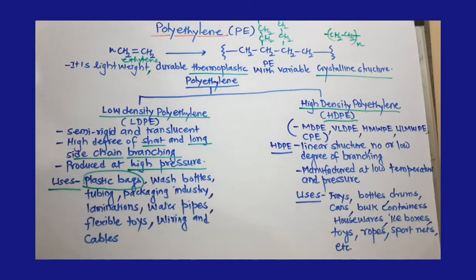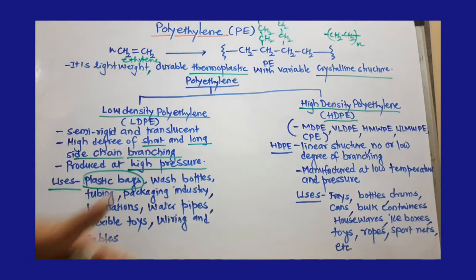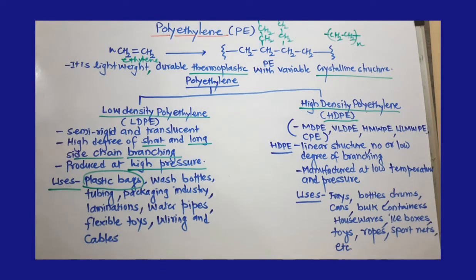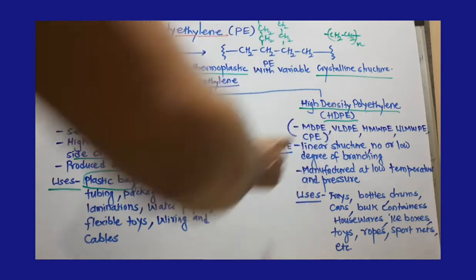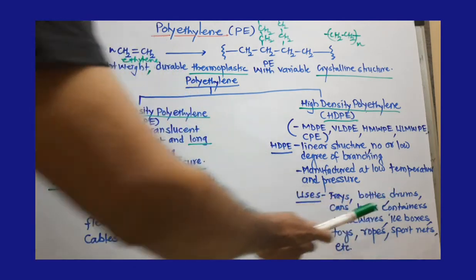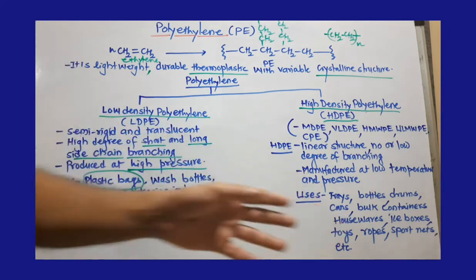LLDPE, linear low density polyethylene, is actually a mixture of monomers with different properties, which is why it is not included in the main classification. Moving to HDPE — high density polyethylene — it is actually linear, with no branching or a very low degree of side chain branching. Because of that, it is high density and is manufactured at low temperature and pressure, unlike LDPE which requires high pressure.